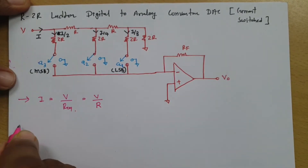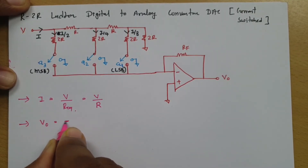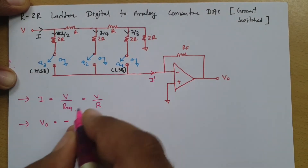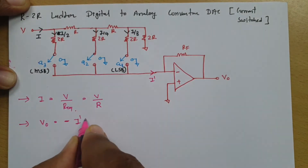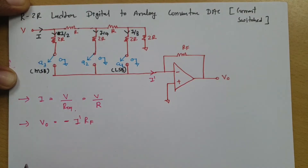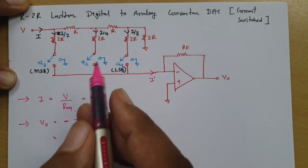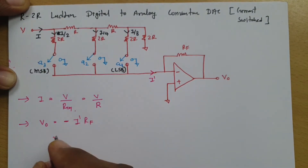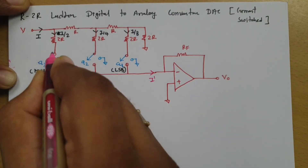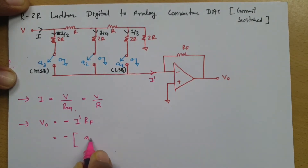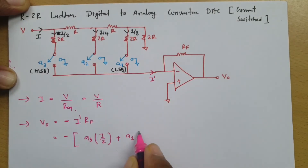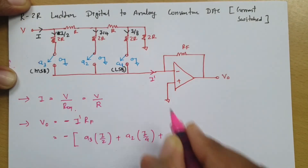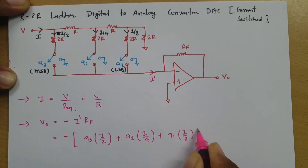The output voltage V0 = −(I' × RF), where I' is the current flowing into the feedback node, which depends on which switches are pressed. If all switches are pressed, I' is the sum of all three branch currents. If A3 is pressed, I/2 flows. If A2 is pressed, I/4 flows. If A1 is pressed, I/8 flows. So I' = (A3 × I/2) + (A2 × I/4) + (A1 × I/8).